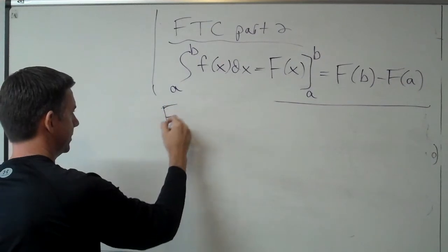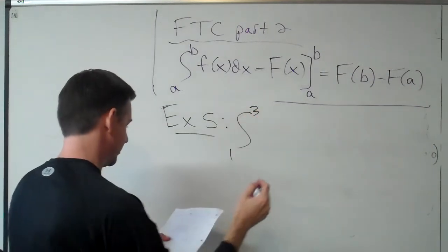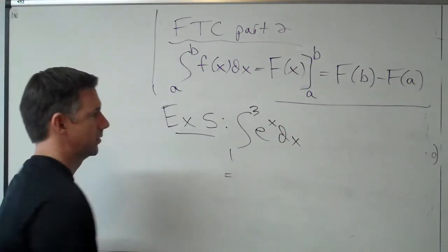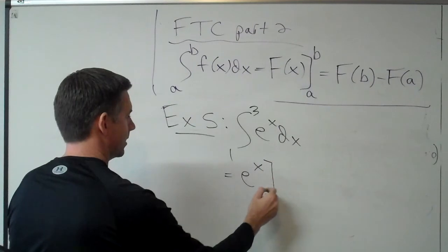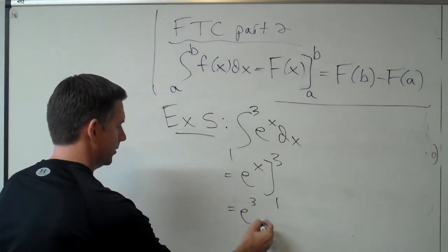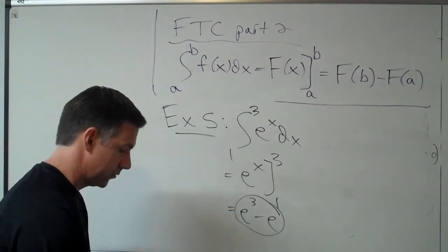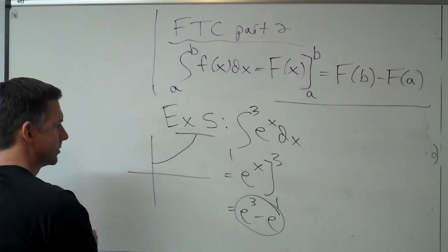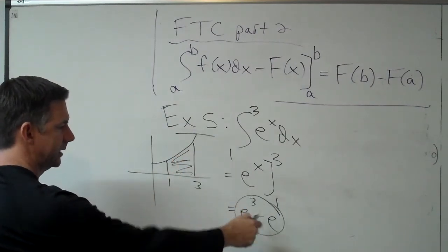Example five: integral from one to three of e to the x dx. We know the anti-derivative of e to the x is e to the x — there's no change. So e to the x evaluated from one to three: we plug in the top number, giving e cubed minus e. That's your answer, or you can use a decimal approximation. Graphically, e to the x looks like this, and we just found the area from one to three is e cubed minus e exactly.